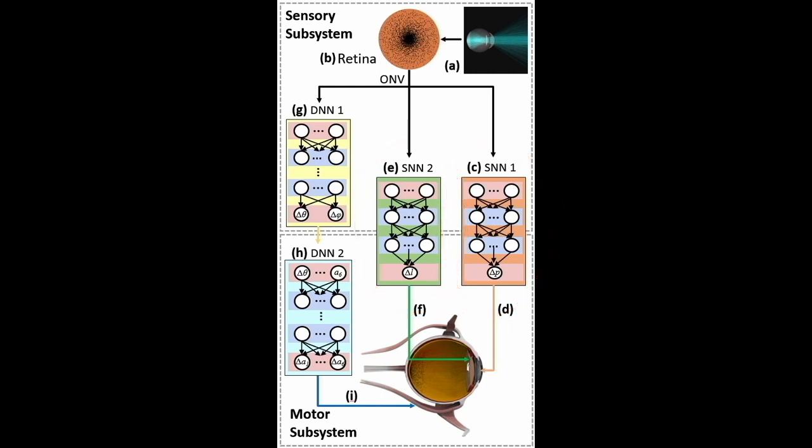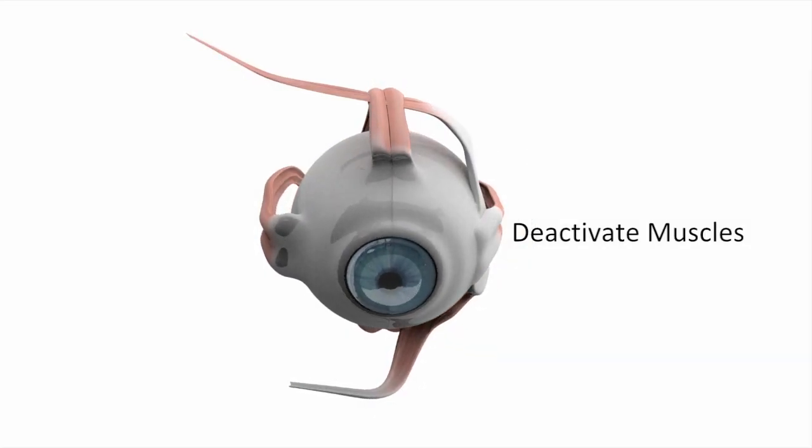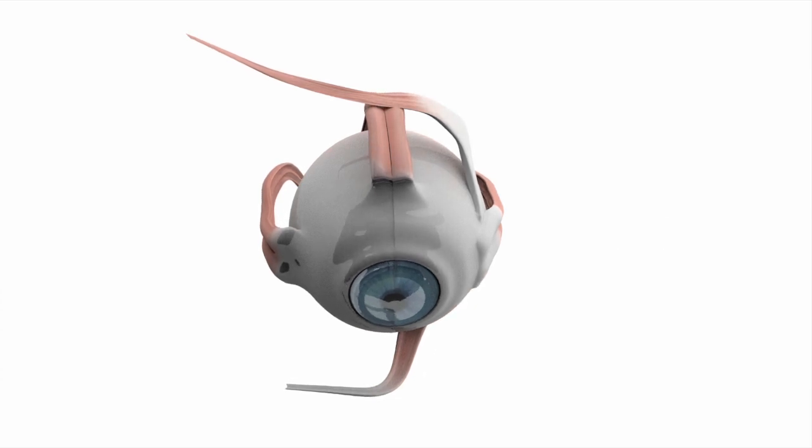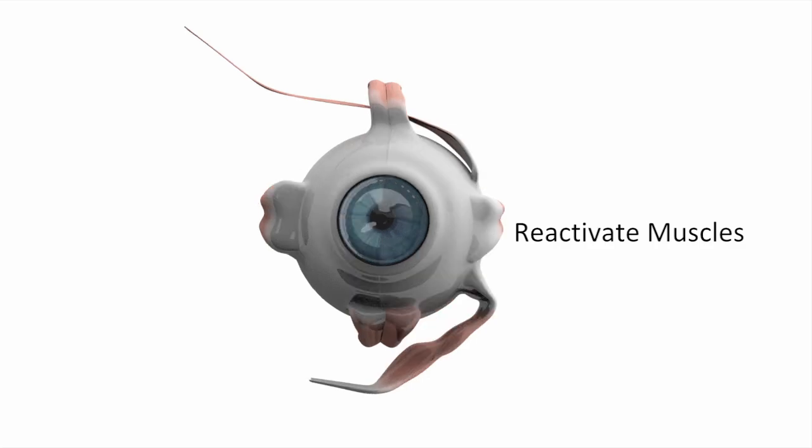All four neural networks are trained offline using data synthesized by the eye model itself. Without muscle activation, the eye droops in gravity due to its mass distribution. Its online actions are controlled through appropriate muscle activation signals generated by its neuromuscular controller.